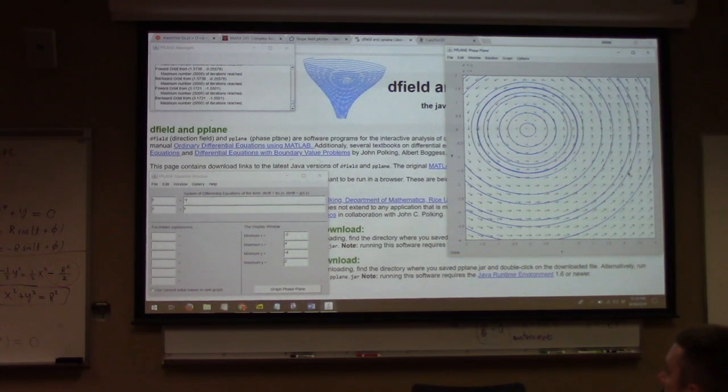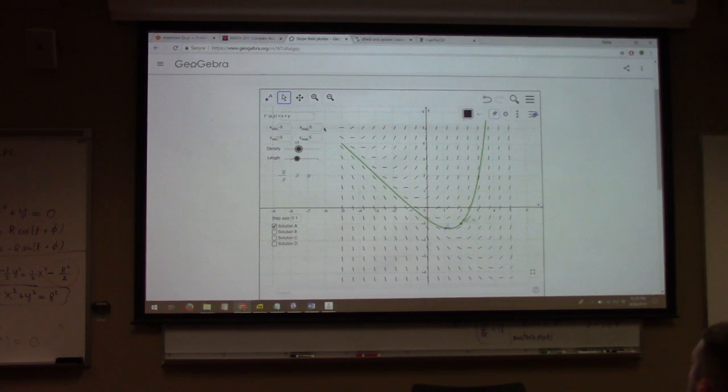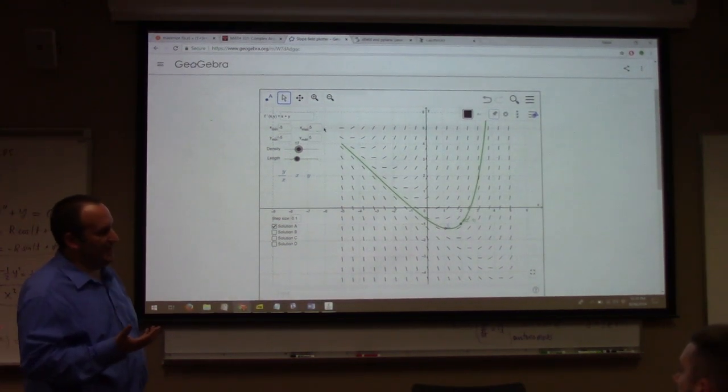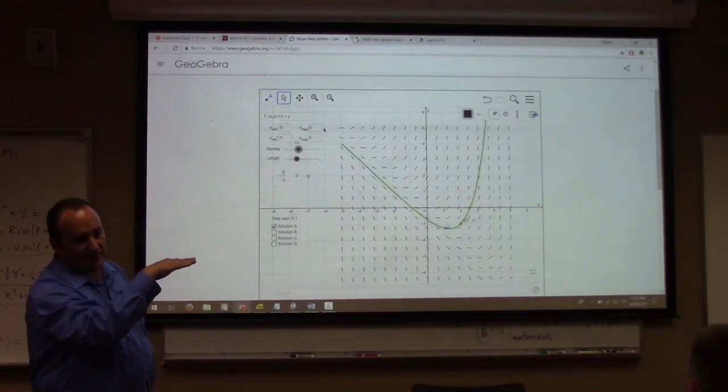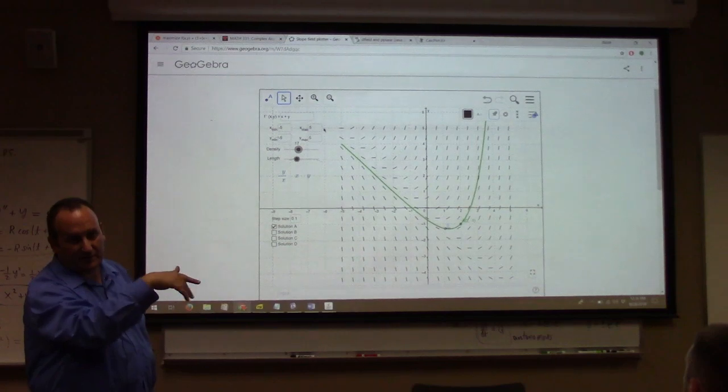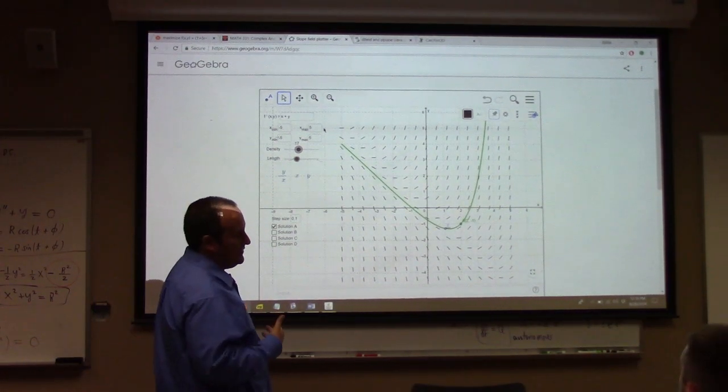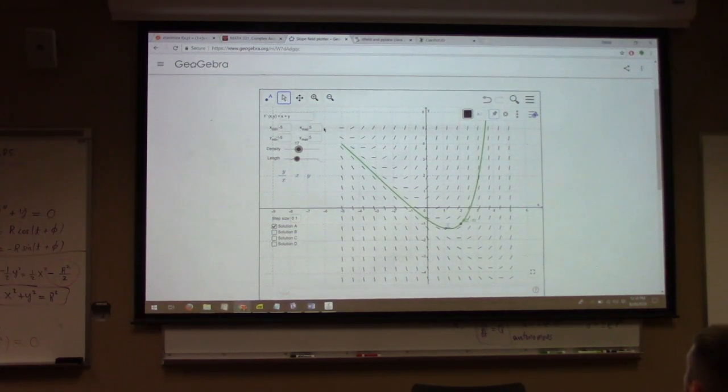This is also useful. GeoGebra. This right here is a slope field. What's the difference between a slope field and a direction field? Slope field is sort of the natural companion to like 0.2 over there. There's no time. We just have little dashes that indicate the slope but not the direction of the curves. So a slope field is the analog of a direction field for something like that. And this is linked on my webpage if you want to play with this thing too.